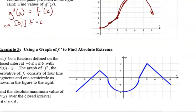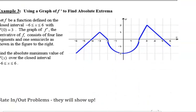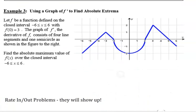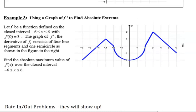For example 3, we're looking again at a graph of f prime — it's 4 line segments and 1 semicircle. We are looking for the absolute maximum value of f, not f prime, over the closed interval from negative 6 to 6.